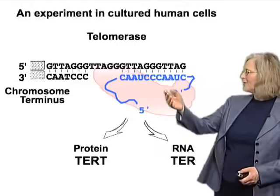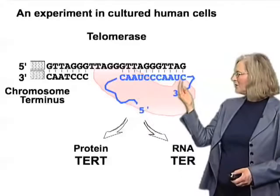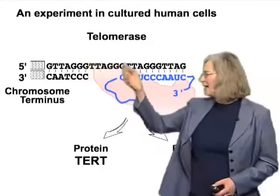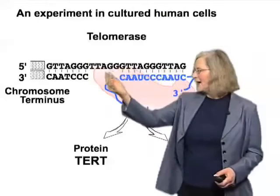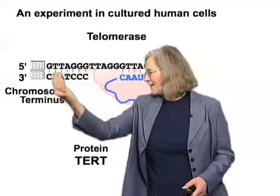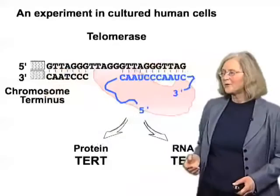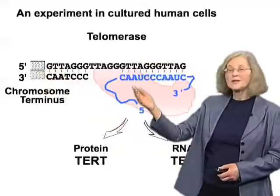Here in very simple diagrammatic form is human telomerase — this would be the template sequence of the human telomerase RNA, and this is the overhanging G-rich strand. It's actually usually longer than this, but I've just shown it in simple diagrammatic form. This is the duplex telomeric DNA consisting of hundreds or thousands of telomeric repeats going toward the chromosome interior.